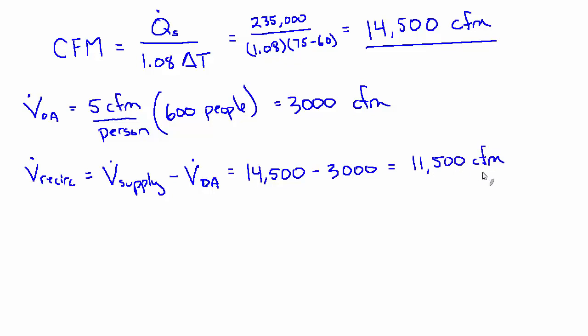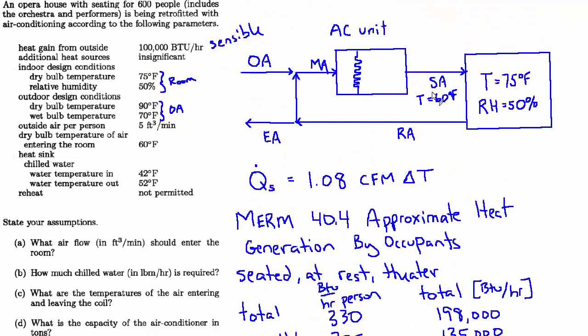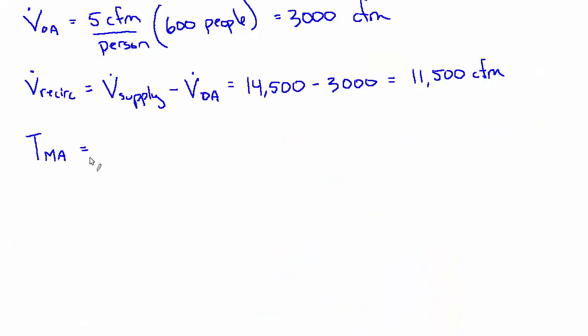And now we can do that mixed air calculation. So our goal is to find out what's the resulting temperature of these two airstreams of known temperatures and known volumes mixing together. So the temperature of the mixed air will be the 11,500 CFM times 75 degrees plus the 3,000 CFM times 90 degrees